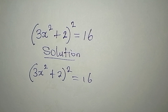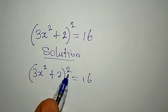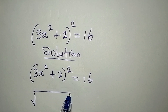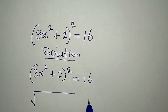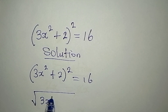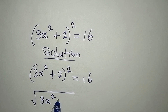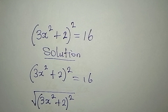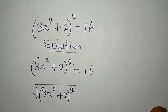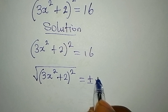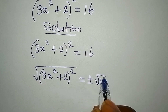The first thing is to remove the square, and we do that by taking the square root of both sides. So we have the square root of (3x squared plus 2) to the power of 2, and on the right we have positive or negative square root of 16.